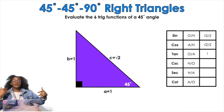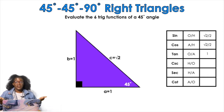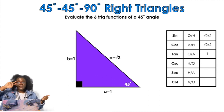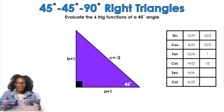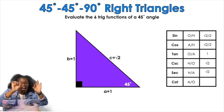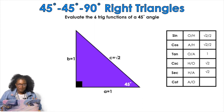Now we find cosecant, secant, and cotangent, which are just reciprocal functions — sine flipped, cosine flipped, tangent flipped. Cosecant: our sine was 1 over root two, so flipped it's root two over one, which is just root two. Secant: cosine was 1 over root two flipped, so also root two. Cotangent: tangent was 1 over 1 flipped, which is still one.